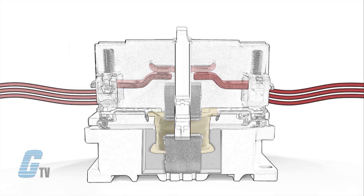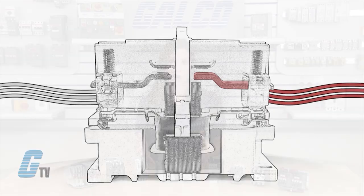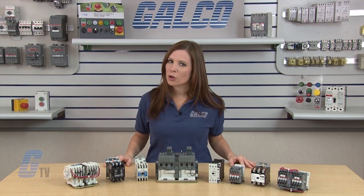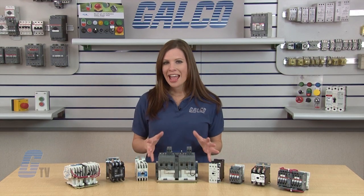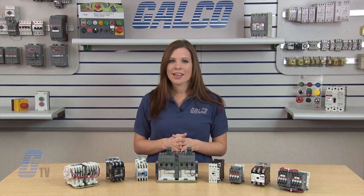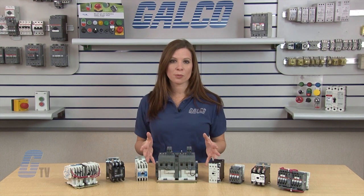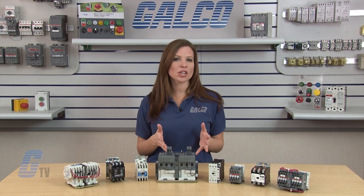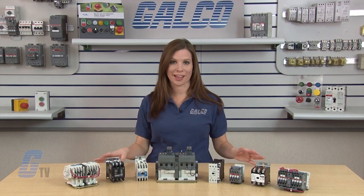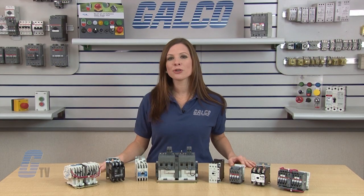When the coil is de-energized, the magnetic field is broken and the spring forces the two sets of contacts apart. Contactors are used when no overload protection is necessary and at lower levels of electrical current. They are also operated electromechanically and use a small control current to open and close the circuit.